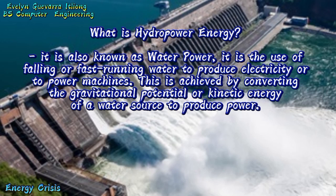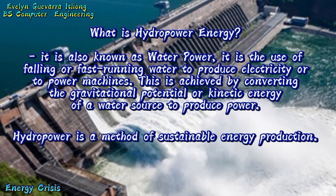What is hydropower energy? It is also known as water power. It is the use of falling or fast-running water to produce electricity or to power machines. This is achieved by converting the gravitational potential or kinetic energy of a water source to produce power. Hydropower is a method of sustainable energy production.